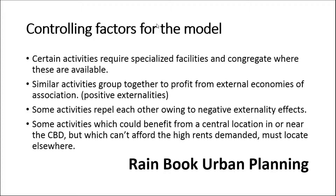Number four: some activities which could benefit from a central location in or near the CBD, but which cannot afford the high rents demanded, must locate elsewhere. That means the bid rent curve I mentioned in the concentric zone model is still the main principle of this model. Warehousing and wholesaling are examples — they require large structures and benefit from a central location, and are usually well connected to the CBD by highway or railways.